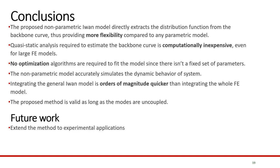In conclusion, the proposed non-parametric I1 model directly extracts the distribution function from the backbone curve, thus providing more flexibility. Since we're using quasi-static analysis to obtain the curve, which is computationally inexpensive even for large finite element models, we don't need any optimization algorithms to get some finite set of parameters. It was found for the case study shown here that the dynamic behavior of the system can be accurately simulated from the non-parametric model and that simulation time is much less than integrating the whole finite element model.